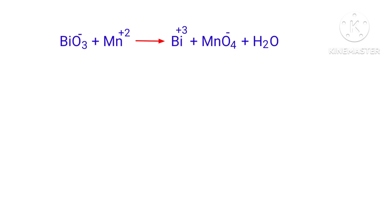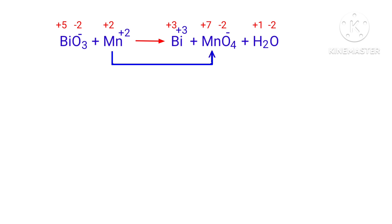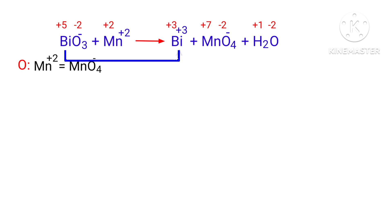Figure out the reducing and oxidizing agents by the rules of assigning oxidation numbers. In this equation, manganese has a charge of +2 and is changing to +7, so manganese is being oxidized. Bismuth has a charge of +5 and is changing to +3, so bismuth is being reduced.